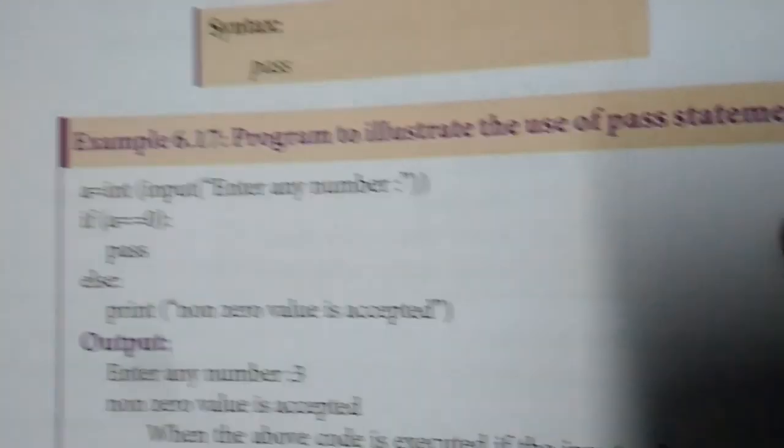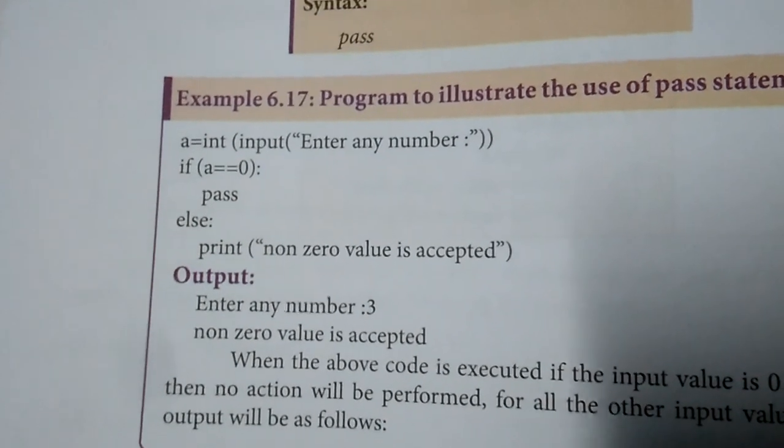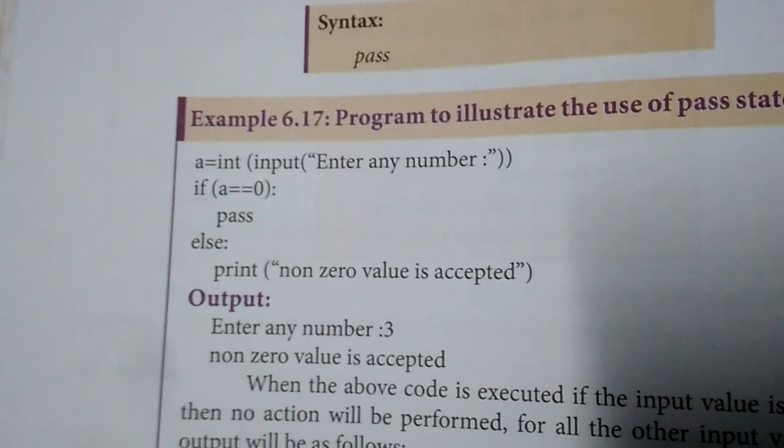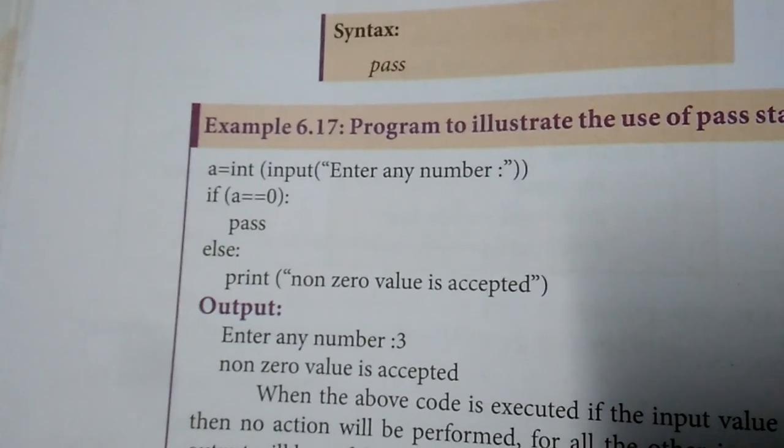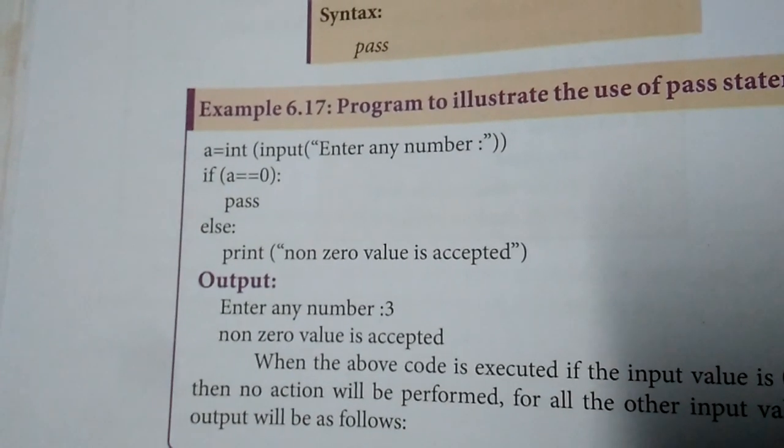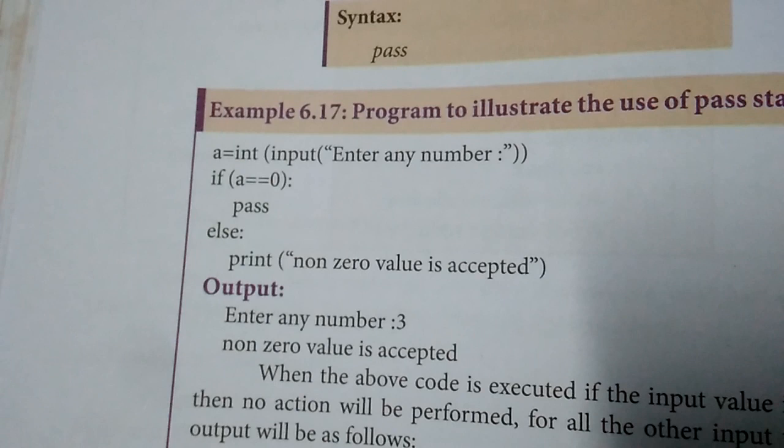The next statement is pass. It is a null statement. The pass syntax is just 'pass'. When it is executed by the interpreter, it is completely ignored. Pass is ignored.